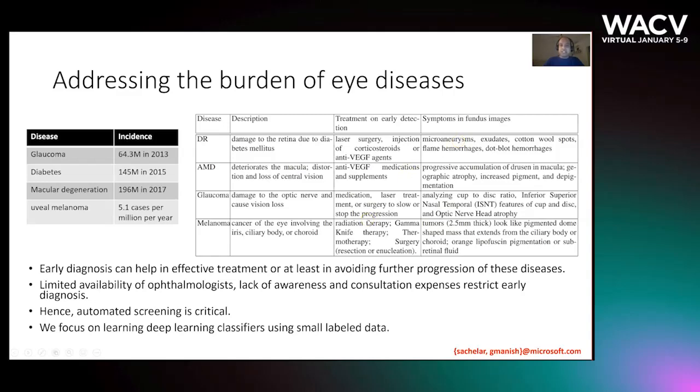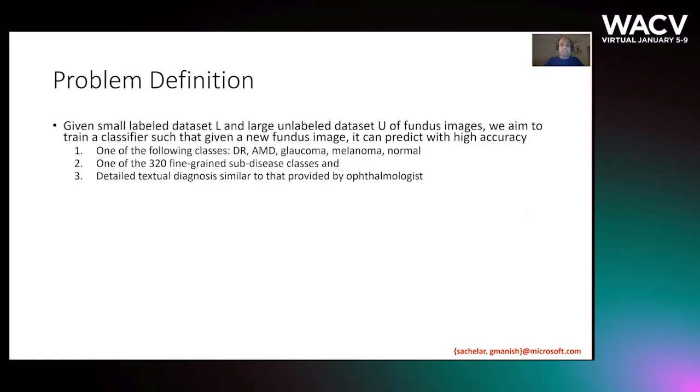We focus on learning deep learning classifiers, but they require large amounts of labeled data. Our focus is to use small amounts of labeled data to detect these eye diseases. Specifically, our problem is to use small labeled dataset L and large unlabeled dataset U to detect these diseases broadly or even figure out fine-grained sub-diseases out of these four 320 fine-grained subcategories, or even come up with an automated diagnosis as a doctor would write. This problem is really challenging.